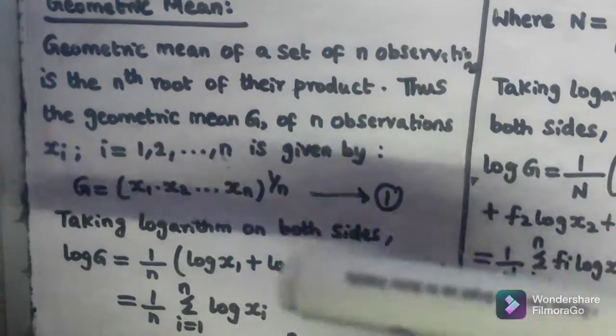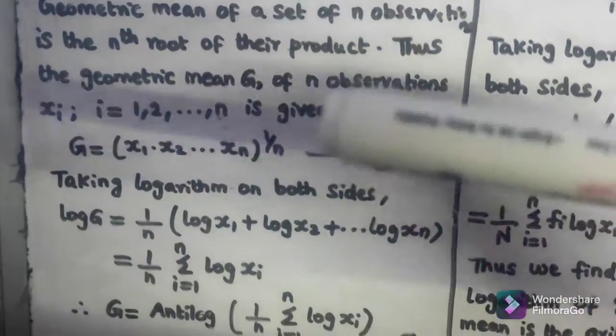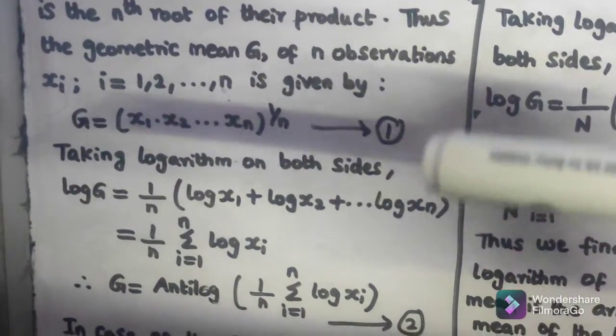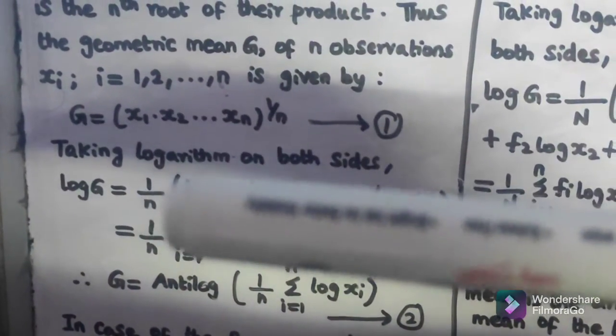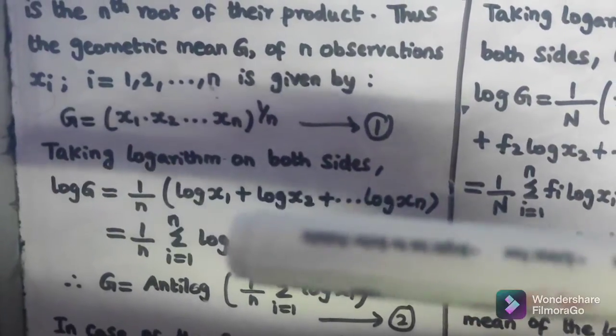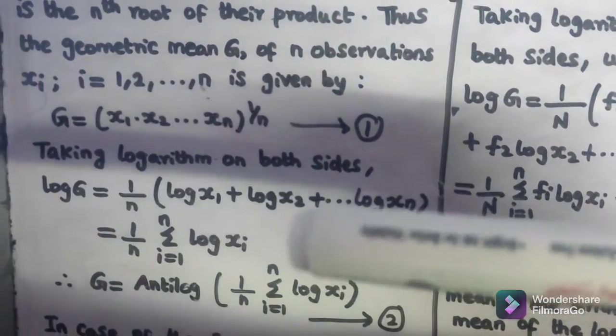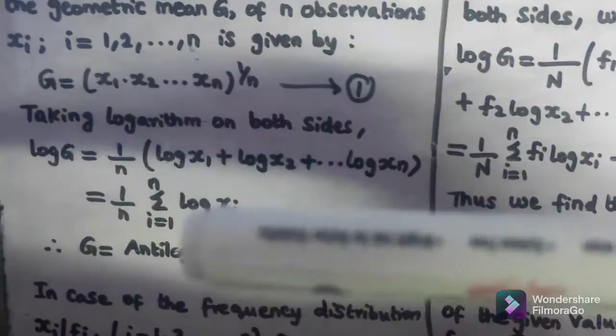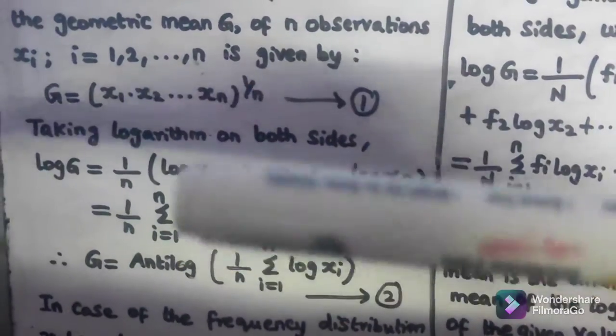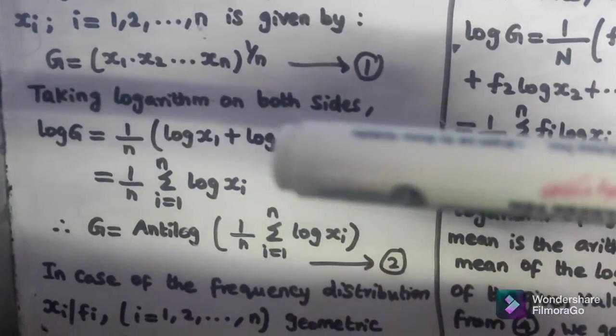This equals (1/n) Σ(i=1 to n) log xi. Therefore, G = antilog((1/n) Σ(i=1 to n) log xi). This is equation 2.